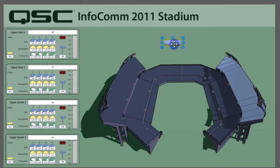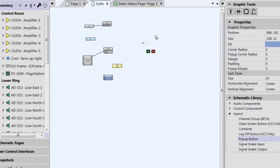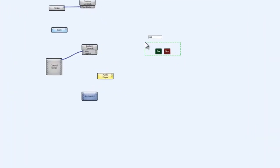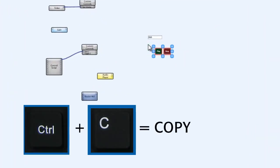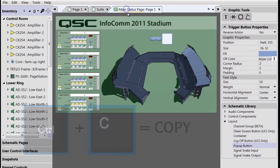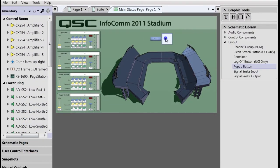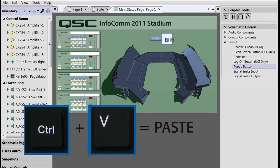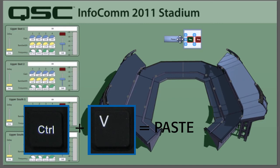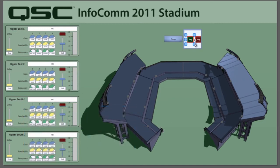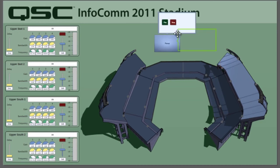This gives you quick access to either hide or show some controls without having to navigate to a different page. For example, you could use this in one of the sections in your stadium, and then fill the pop-up window with the status information of the amplifiers in that area. You can make the pop-up window as large as you want and pull it into any side of the original button.